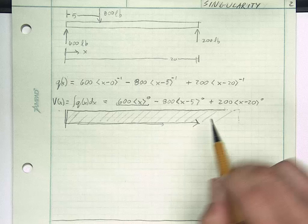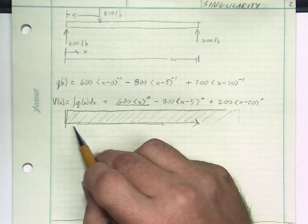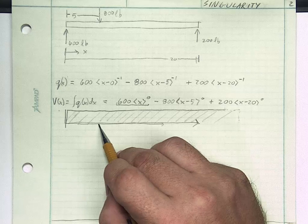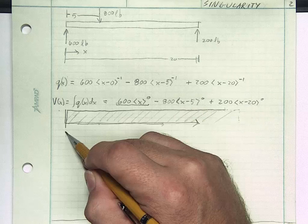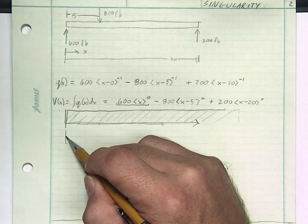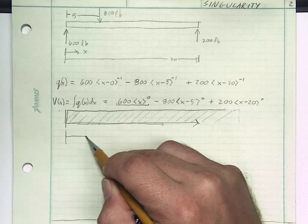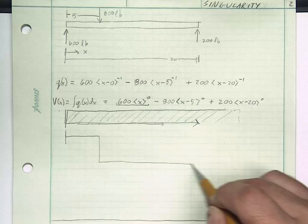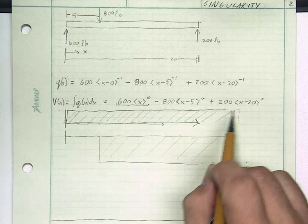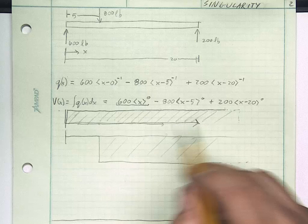Let's look at what this looks like. Here's x. The contribution for this term right here at x equals 0 is going to go up to 600 and it's going to stay on forever, all the way for infinity. That's the contribution for that first term. The second term at x equals 5, at this term we're going to now subtract 800. So its contribution is nothing happens until 5 and then it drops down 800 and it continues forever.